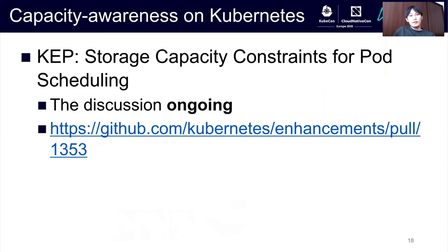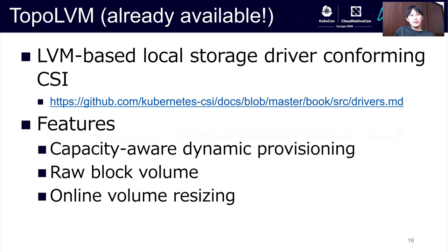However, the current Kubernetes does not support capacity awareness. Also, the KEP which proposed how to expose storage capacity to Kubernetes was posted and merged, but pod scheduling with storage capacity is still ongoing. So, ahead of it, we've implemented a capacity-aware volume provisioner for local storage named TopoLVM, and we've made it as a CSI plugin.